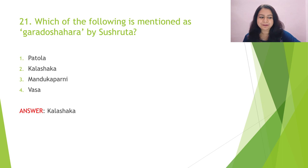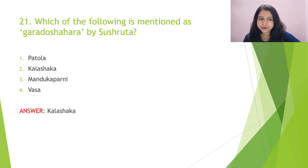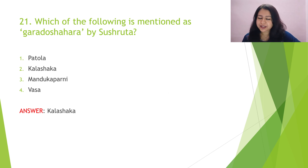Question 21: Which of the following is mentioned as garada shahara by Susruta? The options are padhola, kalashaga, mandukapani, and vasha. This question is from Susruta Sutrasthana, 46th chapter, Annapana Vidyadhyaya, where Acharya has mentioned commonly used annapana vargas and their properties. For kalashaga, Acharya has mentioned 'deepanam kalashagam tu garada shaharam', so the answer is option 2.